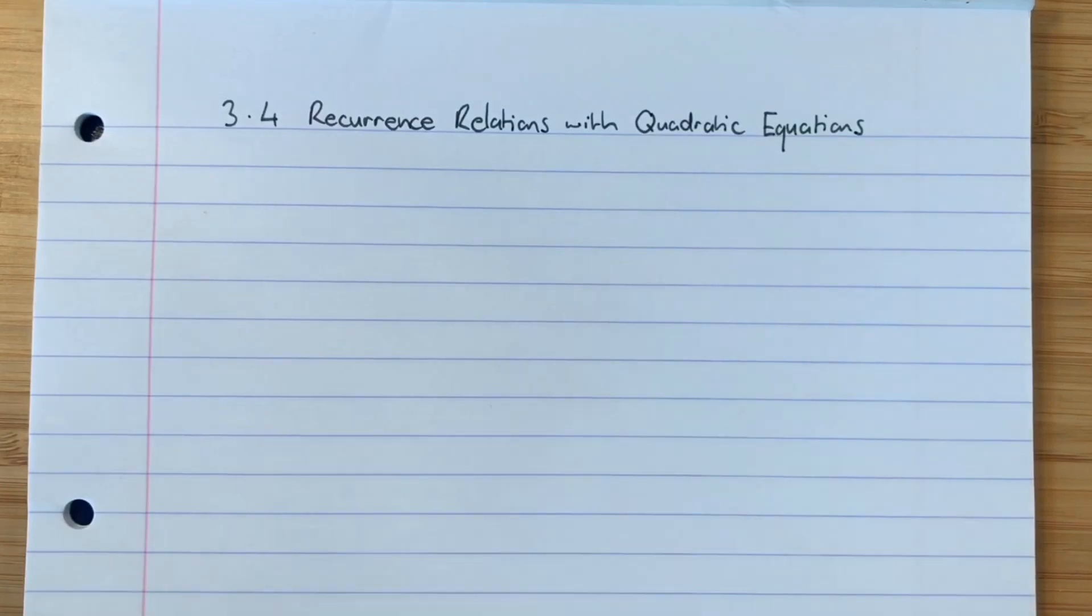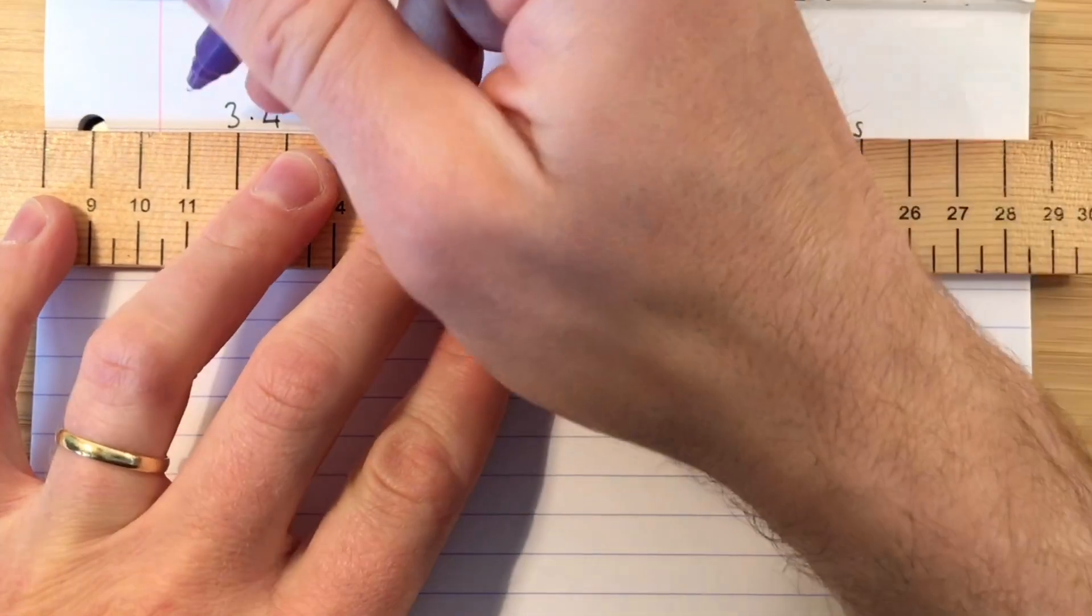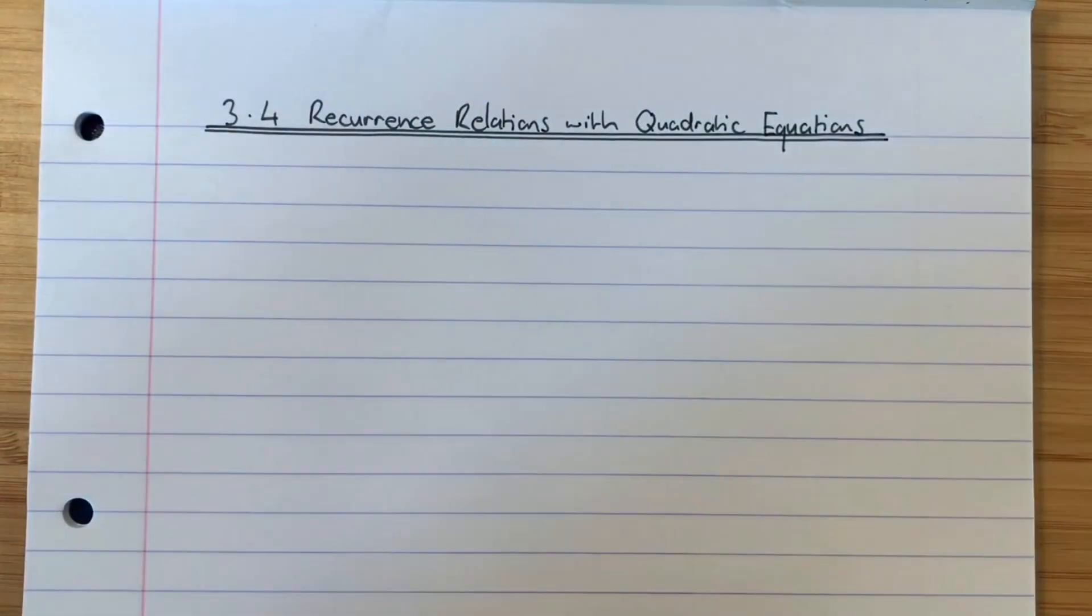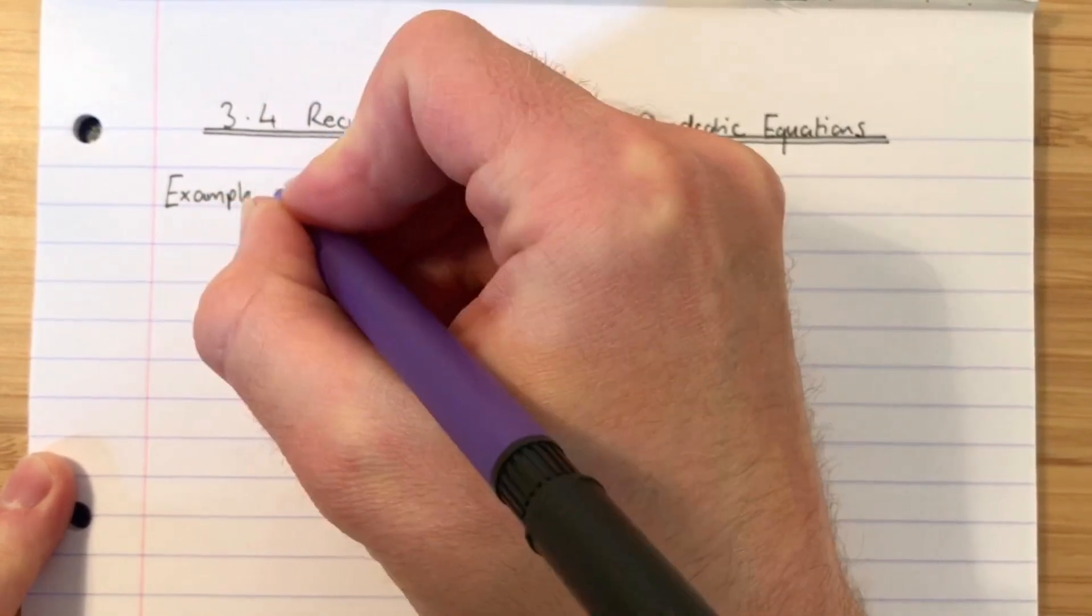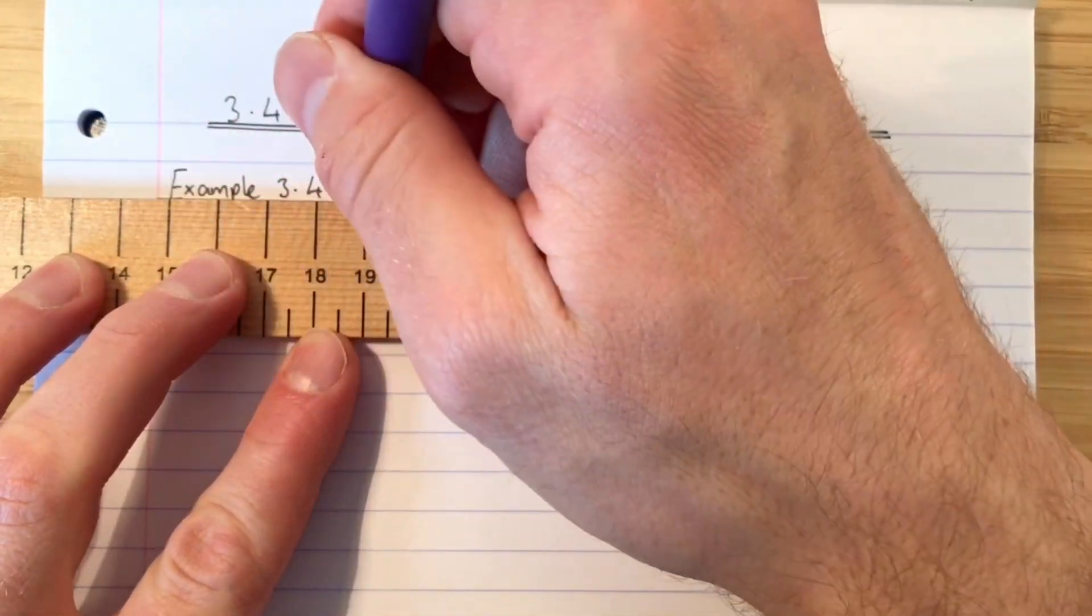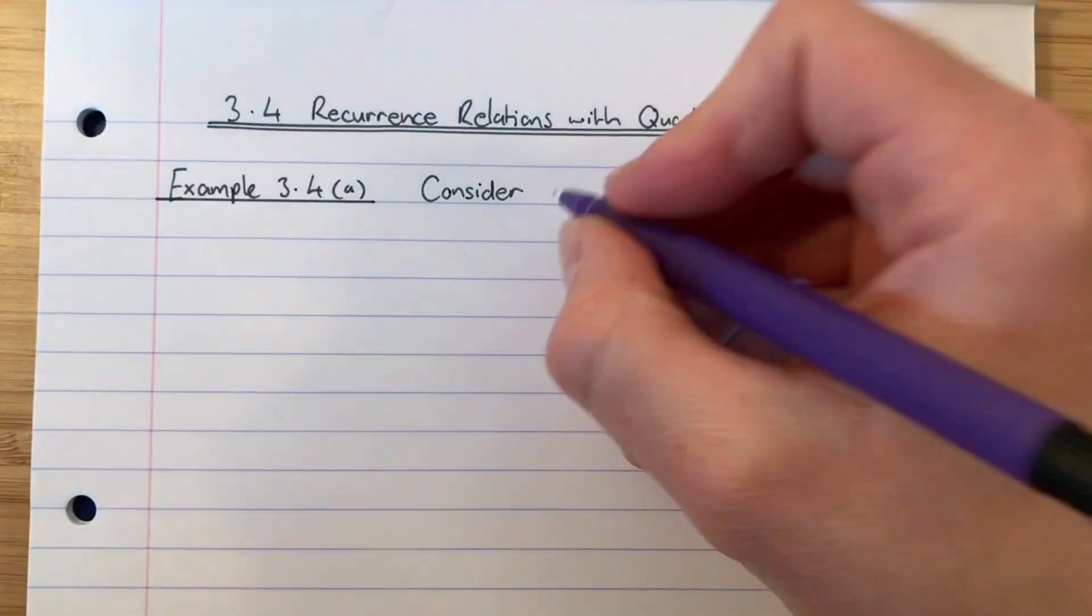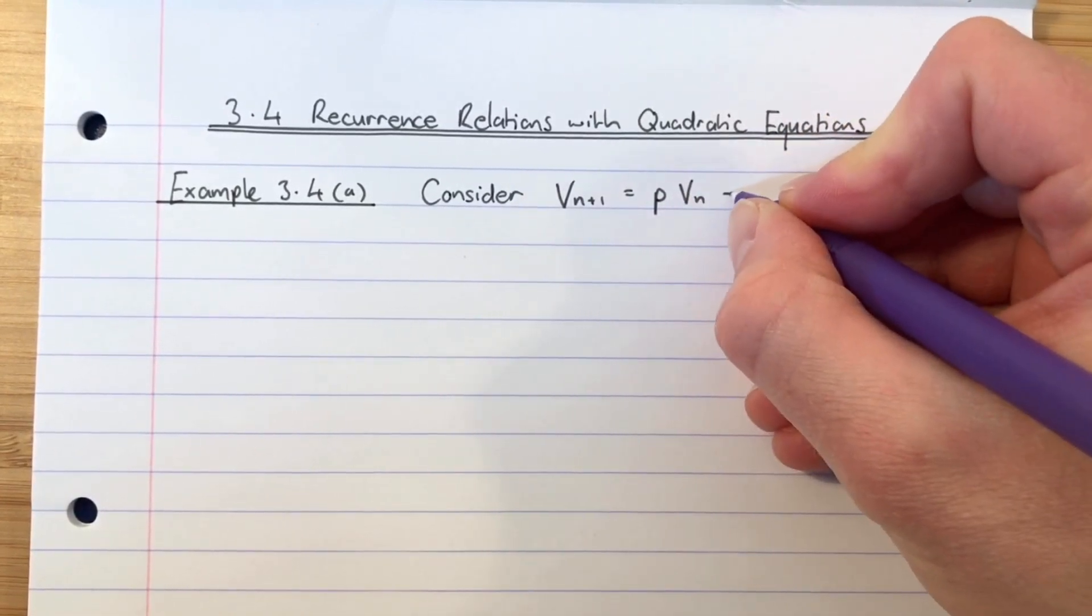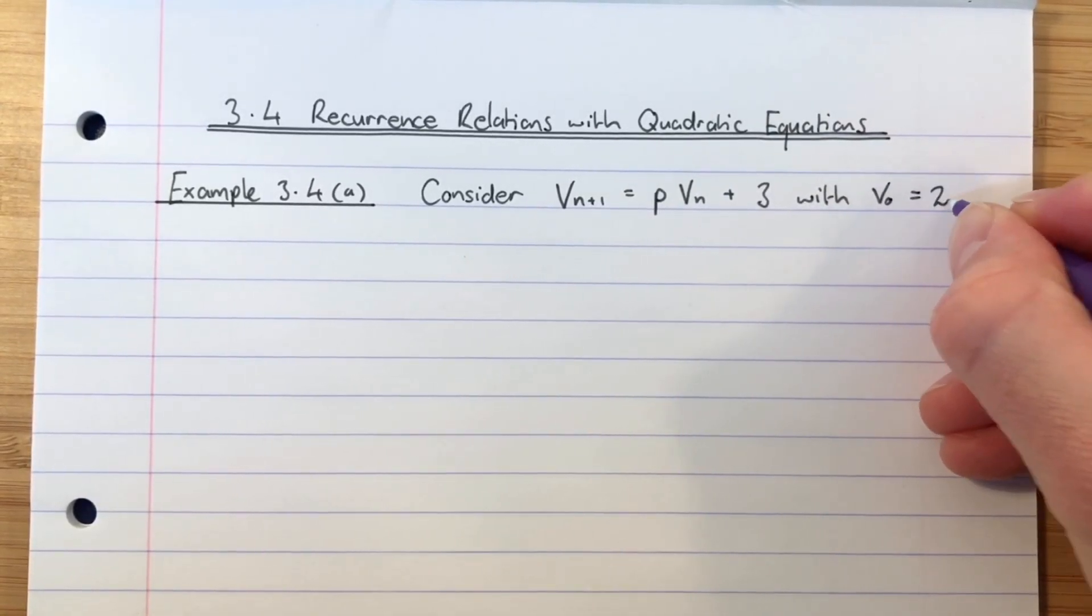So 3.4 is recurrence relations with quadratic equations. So this time we're going to solve a quadratic equation to find our unknown values. So it's recurrence relations with quadratic equations. So again I'm just going to go straight into an example. I'm going to say it's example 3.4a and the example will say consider, and just to spice this up a bit I'm going to use v instead of u. Consider v_{n+1} equals p times v_n add 3, with v_0 equal to 2.